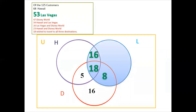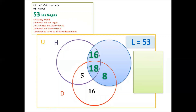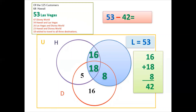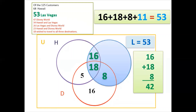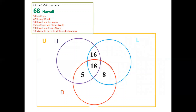Next, 53 want to go to Las Vegas. Inside the Las Vegas circle we already have 16, 18, and 8 — that is 42. So 53 minus 42 equals 11. Check: 16 plus 18 plus 8 plus 11 must equal 53.